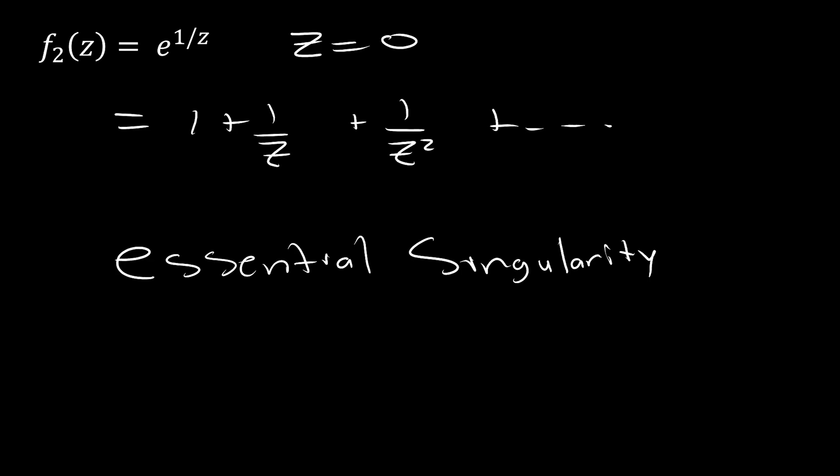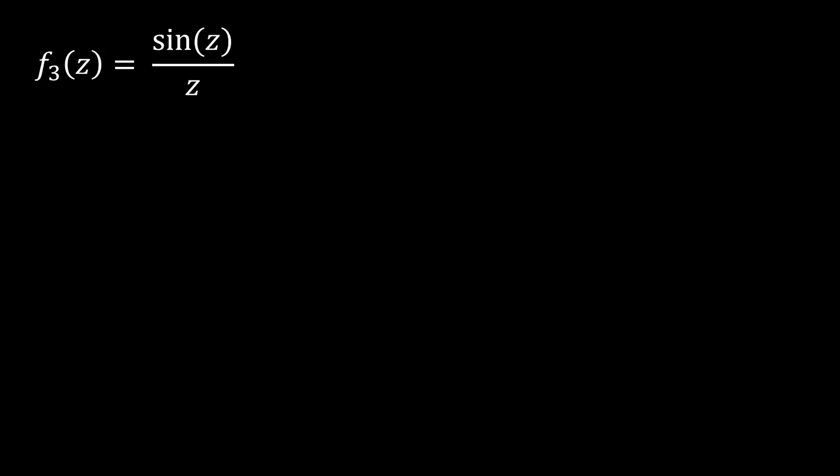Here, we have sine z per z, which is a function that I've used a lot in previous videos. Clearly, there is a singularity at z equals 0 with this function also. And so, we can do the following Laurent series expansion. Here, you can see we only have positive powers of z. And in fact, this is what we call a removable singularity.